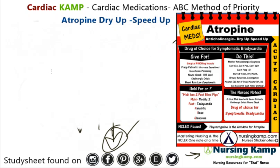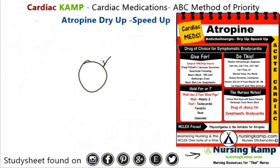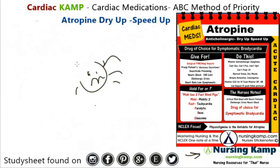Atropine is also used in insecticide poisoning, which is another interesting indication to be aware of.